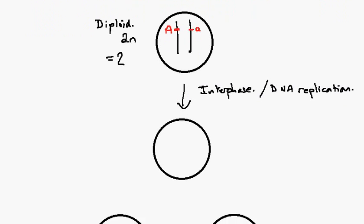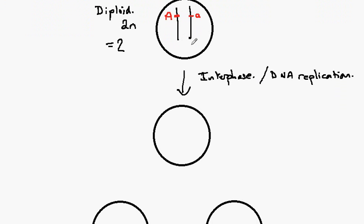This results in our cell here looking like this. So we'd still have this chromosome here but it would have DNA replicated, so we now have two sister chromatids, and we have big A and big A.